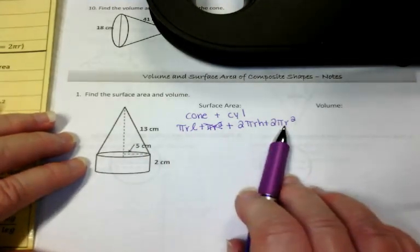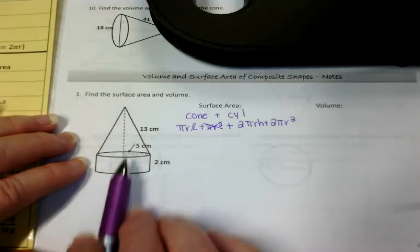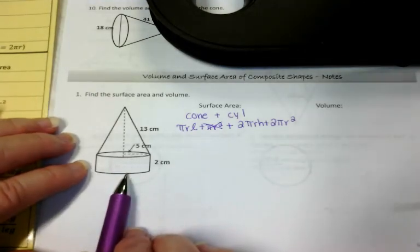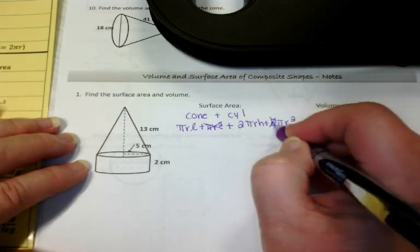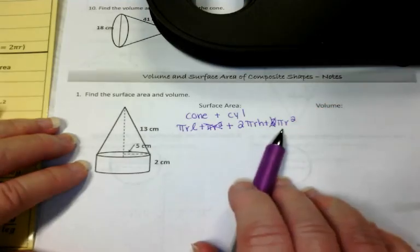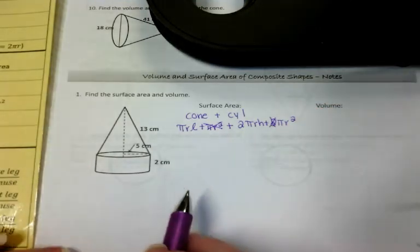For the cylinder, we've got two bases. Are both bases exposed to where they're going to be painted? No. Just one of them is. So we're only going to find the area of one base when we put these together.